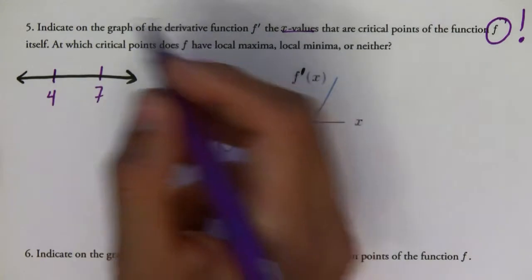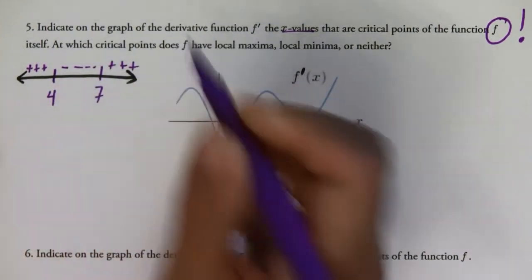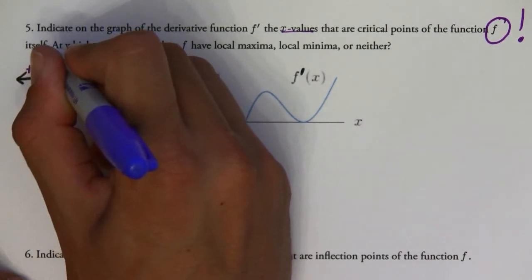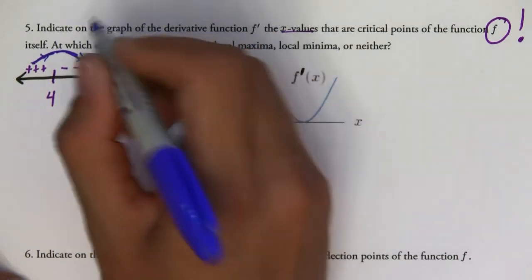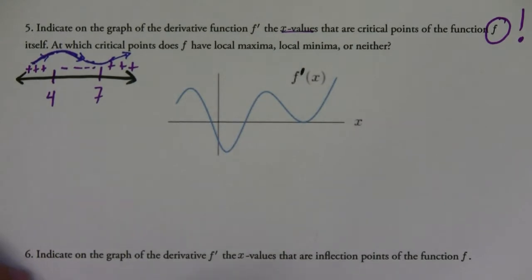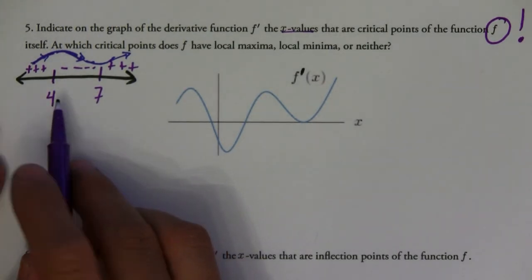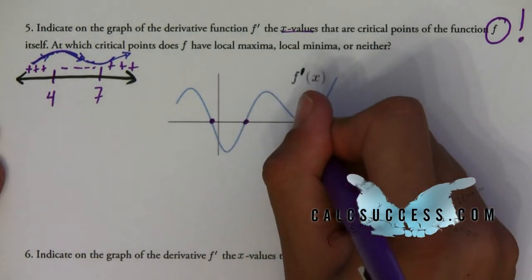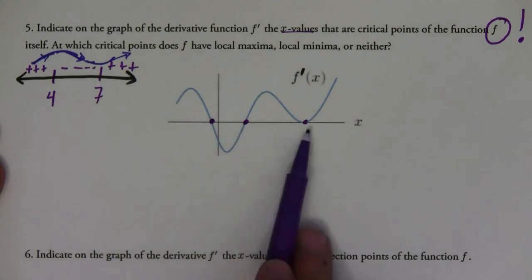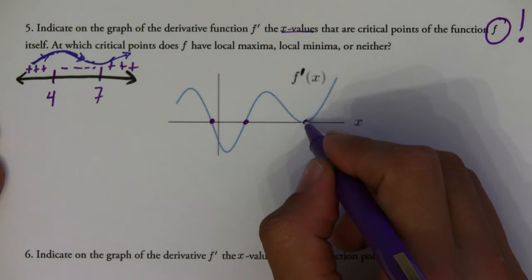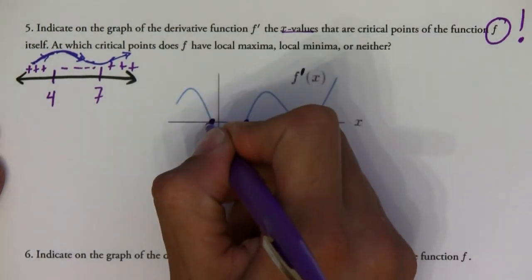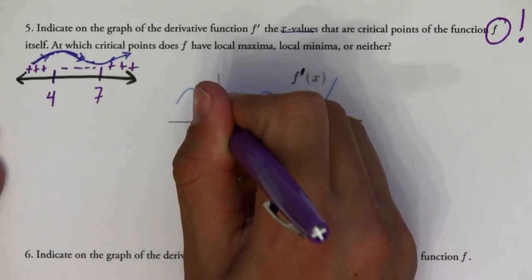When you do the first derivative test, you have a number line — say with values four and seven — and you get that it's positive here, negative, then positive. Since it's increasing and then decreasing, and as long as it's continuous, there's going to be a maximum there. Then if it's increasing again, there's going to be a minimum. The sign of the derivative tells you whether it's a maximum or minimum. Critical points are where the first derivative equals zero, so on this graph, these spots are critical points because the first derivative equals zero at each of them.